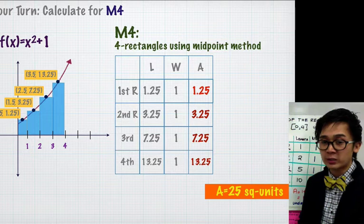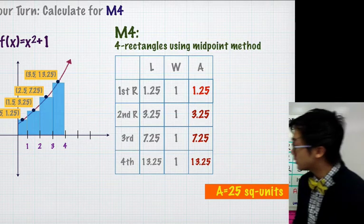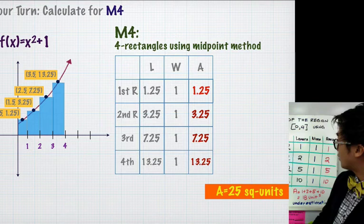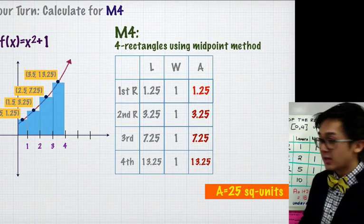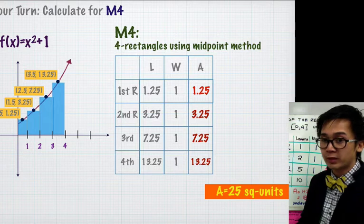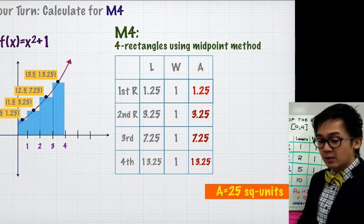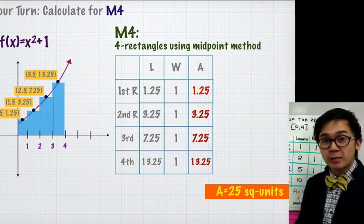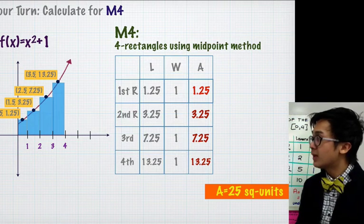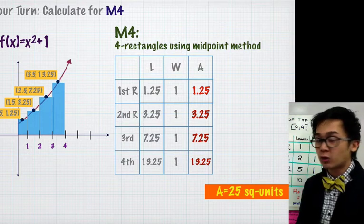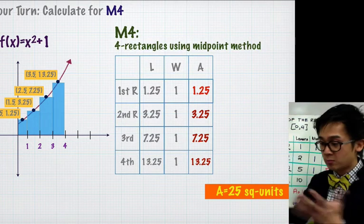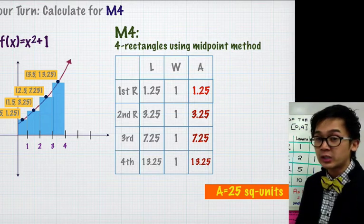Adding all four midpoint areas: 1.25 + 3.25 + 7.25 + 13.25 = 25 square units. Comparing all three methods: left-to-right gives 18 square units, right-to-left gives 34 square units, and the midpoint method gives 25 square units. Now for the last method, I'll use a different geometric figure — the trapezoid. The trapezoid method is probably the most accurate of the four methods because the margin of error is smaller due to the shape of the figure.